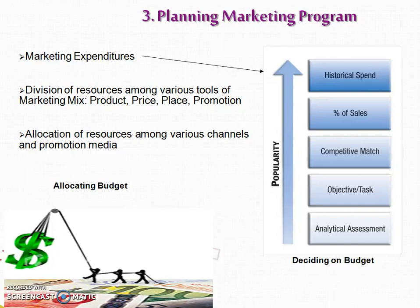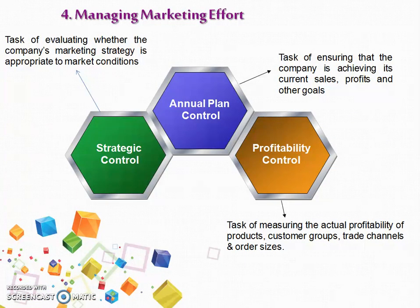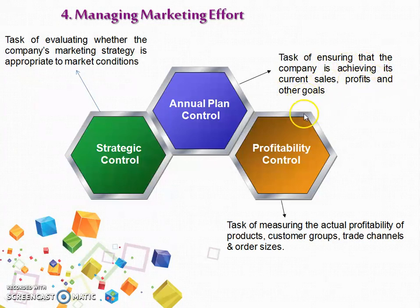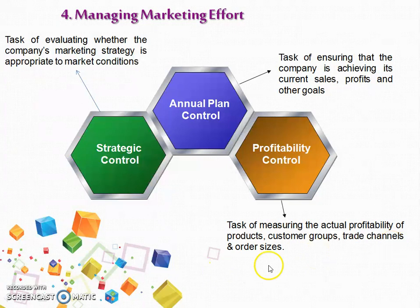After this comes the last step in the marketing process: managing the marketing effort. Whatever planning we do, we need to check whether we are achieving it or not — this step is for the control part. We need to do three kinds of control: first, annual plan control, which ensures the company is achieving its current sales, profit, and other goals; second, profitability control, which measures actual profitability of different products, customer groups, trade channels, and order sizes.